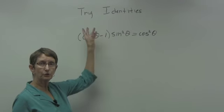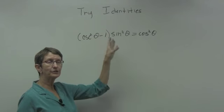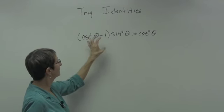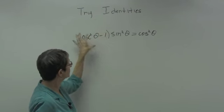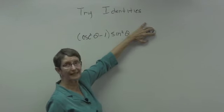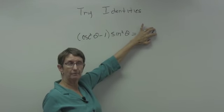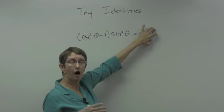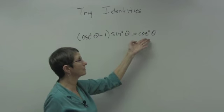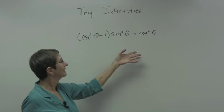Now we're going to look at trig identities. That just means you have an expression that looks kind of complicated, but there are ways often to simplify it to something much better, much easier to read.